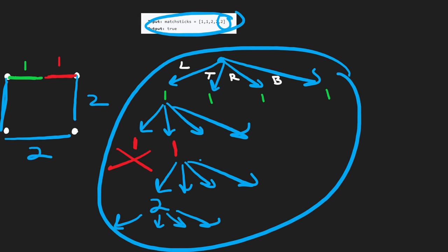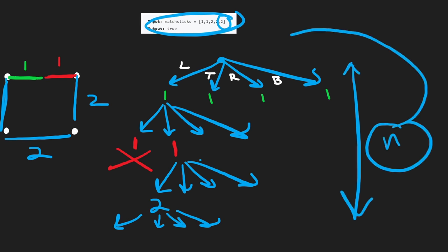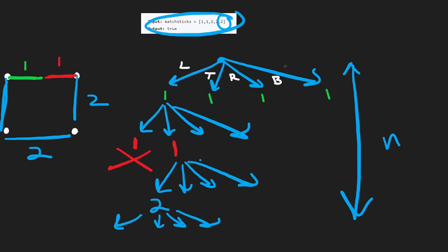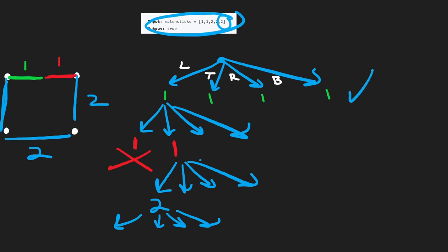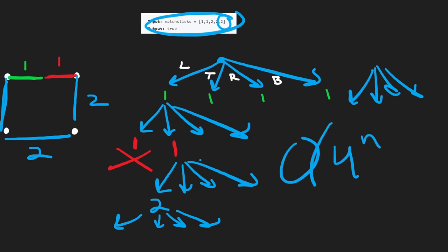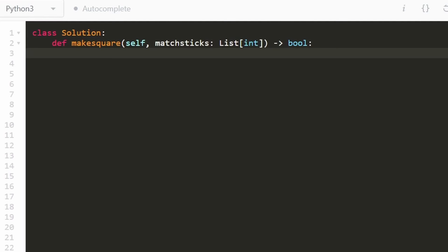The time complexity of this solution: since it's a tree, the height is n where n is the size of the matchsticks array, and the number of decisions at each level is four. Therefore the time complexity is O(4^n). It's not great, but for backtracking it's what we'd expect. Now let's write the code.